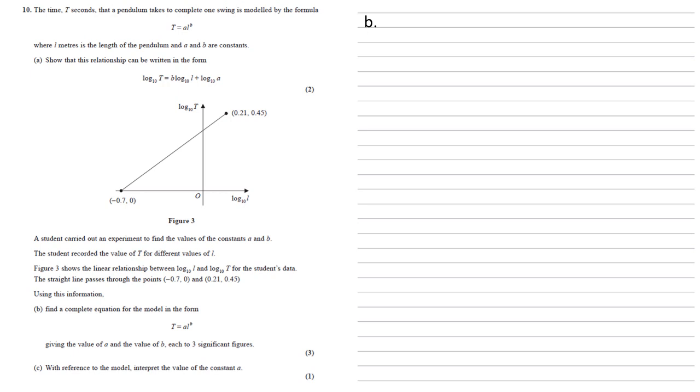Using this information, we need to find a complete equation for the model in the form t equals a l to the b, giving the value of a and the value of b each to three significant figures.